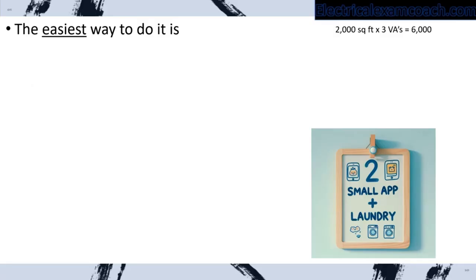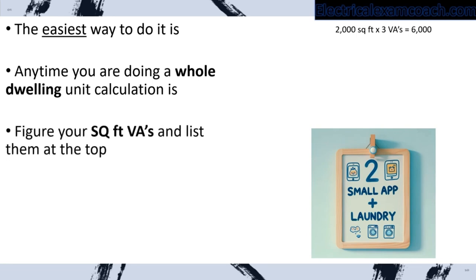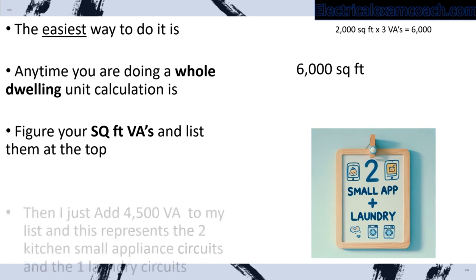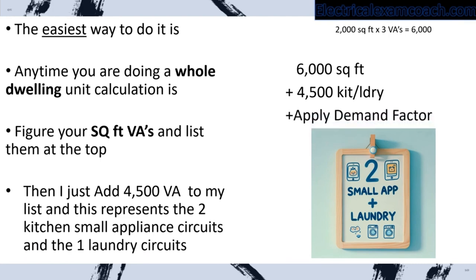The easiest way to do it is: any time you're doing a whole-dwelling-unit load calculation, take your square footage and multiply it by 3 VAs per square foot. Let's imagine a 2,000 square foot house: 2,000 multiplied by 3 VAs equals 6,000 VAs. Then you just tack on the 4,500 for the 2 small appliance and 1 laundry circuit — and only if you're doing a whole-home load calc.